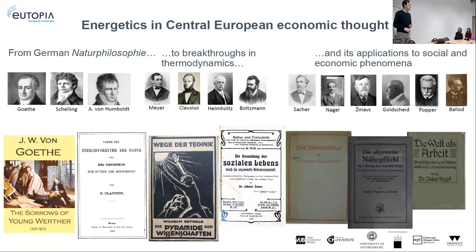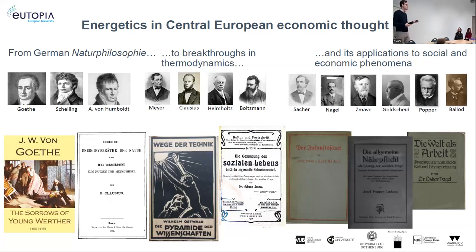For instance, Clausius wrote a book about the energy reserves of nature and their value for human uses, arguing for a solar budget — humans should not live beyond their means, and those means were sunlight. Any energy use beyond that solar budget would be dangerous given the laws of thermodynamics and entropy. My focus, however, lies on other figures who occupied themselves primarily with applications of energetics to social and economic phenomena from the 1880s to the 1930s. These ideas arose but died very quickly from the 1930s onward — partly because of the 1929 crisis, when demand rather than supply became the economic problem.